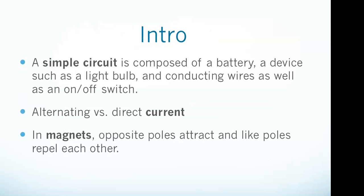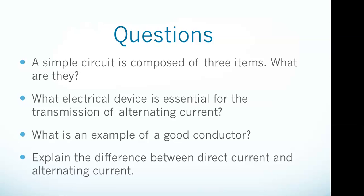Let's get started. A simple circuit is composed of a battery, a device such as a light bulb, and conducting wires as well as an on-off switch. So right there, that first bullet point: simple circuit is composed of three items - battery, device such as a light bulb, and conducting wires. Really there's four because you've got to have your on-off switch.